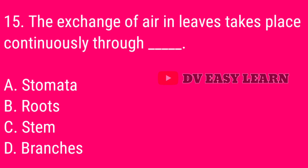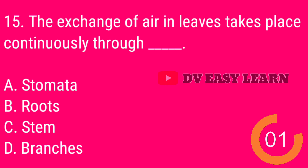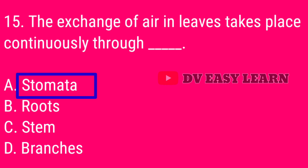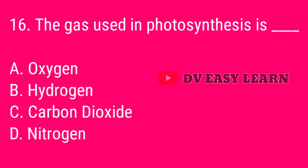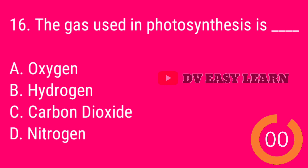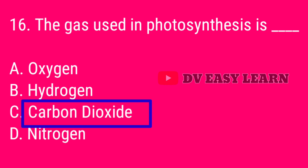Question 15. The exchange of air in leaves takes place continuously through stomata. Question 16. The gas used in photosynthesis is carbon dioxide.